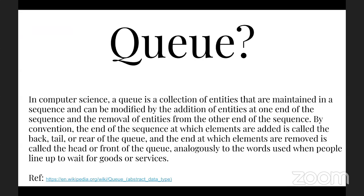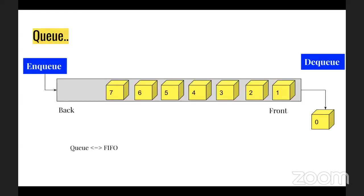A queue is simply like a ticket counter — if you go to any ticket counter or vending machine, everyone lines up and it's first-in, first-out. Whoever is at the front of the counter gets the first ticket, and whoever comes in gets added at the end of the line. Similarly in a queue system, you keep adding messages at the end and consuming from the front.